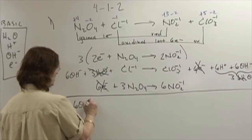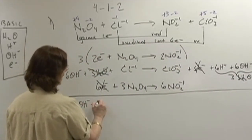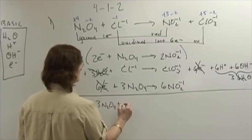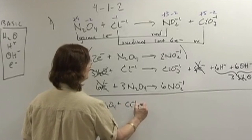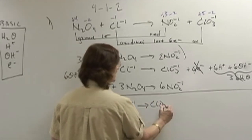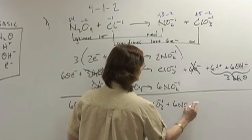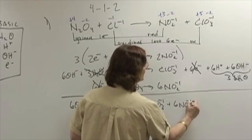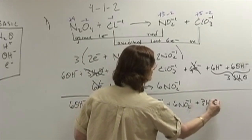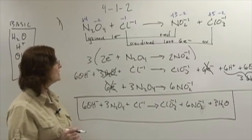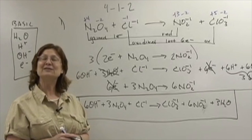Therefore, I'm going to have six hydroxides and three N2O4 and chloride ions and chlorate ions and six nitrites and three waters. That is the lowest ratio of those, and therefore that is my final answer for number one.